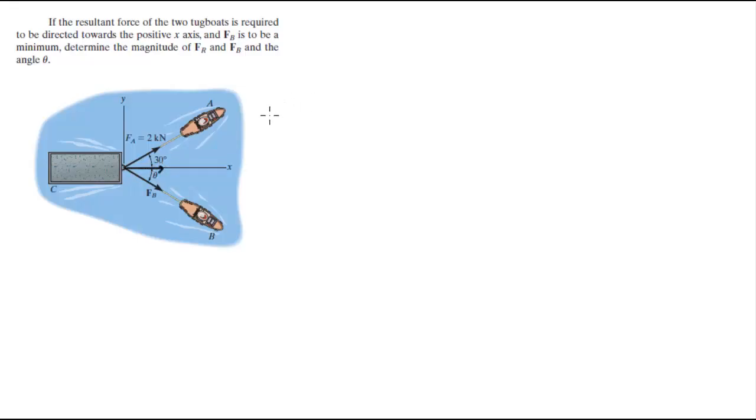And FB is to be a minimum. Determine the magnitude of FR and FB and the angle theta. Now we can tell by looking at it that for FB to be at a minimum, you have to be going straight down.